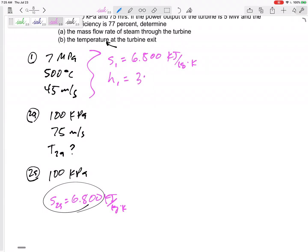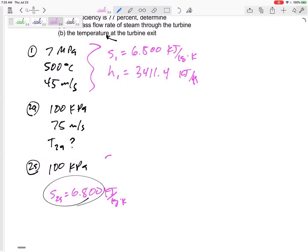While I'm at this property table, go ahead and note h1 = 3411.4 kilojoules per kilogram. From these two, I could look at that property table. With that pressure and that entropy, I could get any other property, like the enthalpy. So h2s is 2466.6 kilojoules per kilogram.